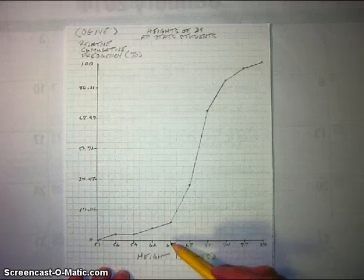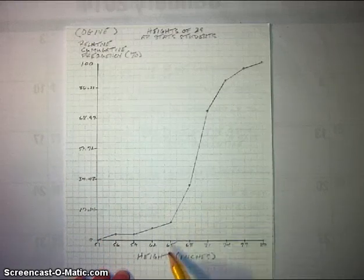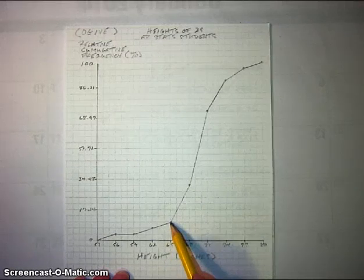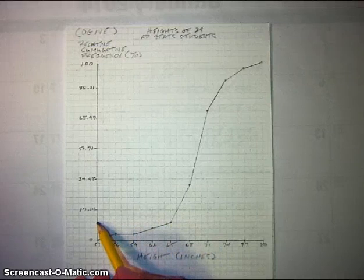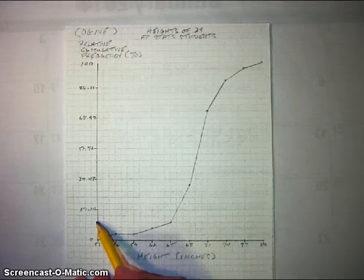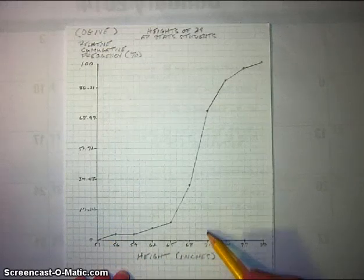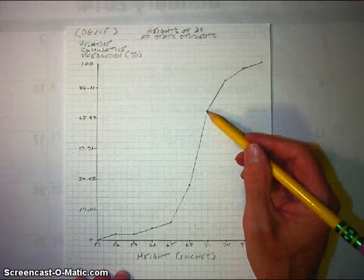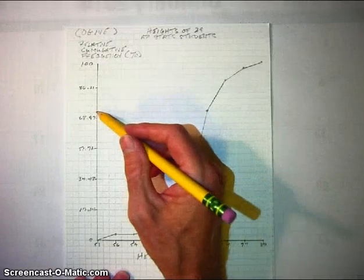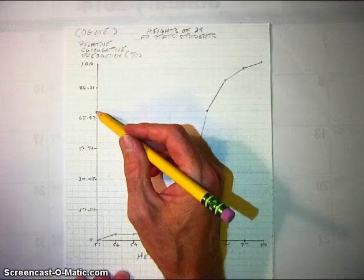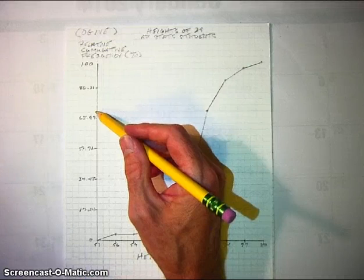For instance, 65 inches is right here on the horizontal axis. If we go up to the ogive and then go straight across, that's going to be about 10 percent — about the 10th percentile in our distribution. If you look at 71 inches, go straight up to the ogive and then go straight across, that's going to be about 72 percent, so roughly the 72nd percentile.